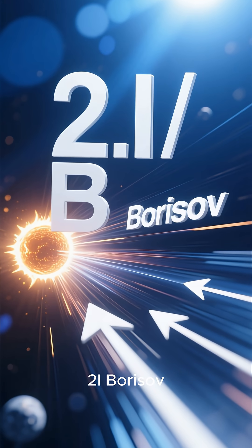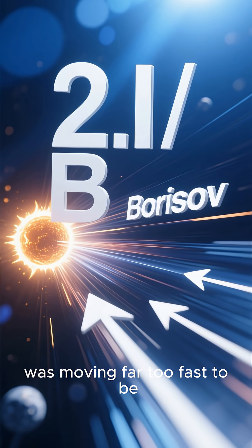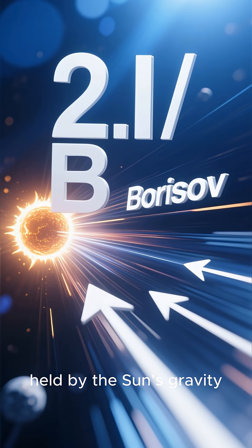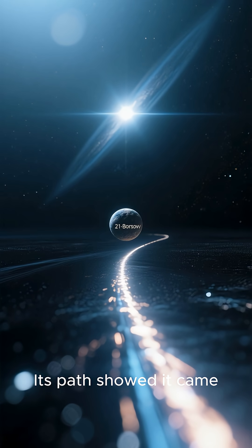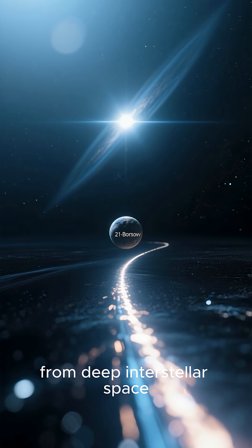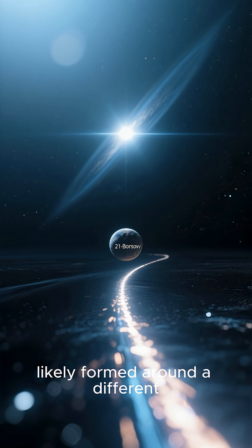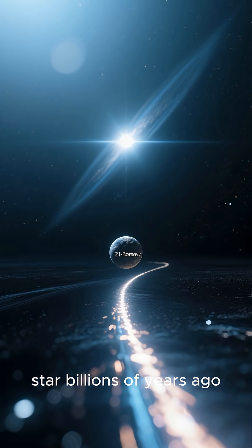Unlike normal comets, 2I Borisov was moving far too fast to be held by the sun's gravity. Its path showed it came from deep interstellar space, likely formed around a different star billions of years ago.